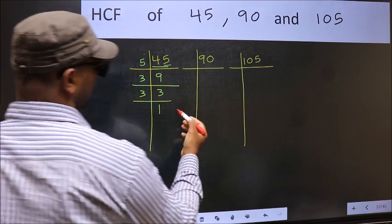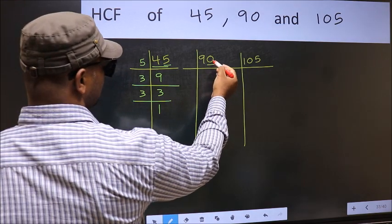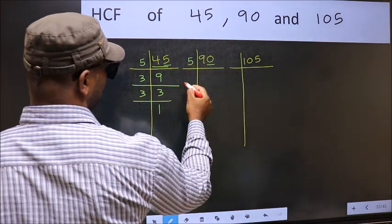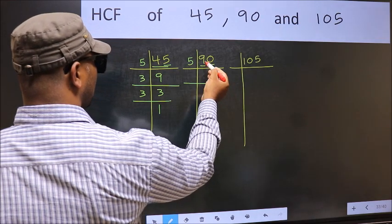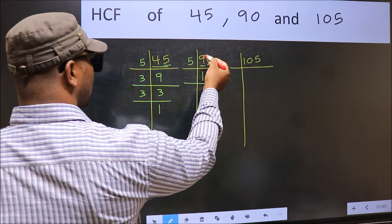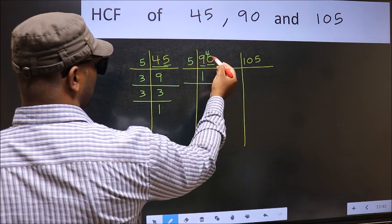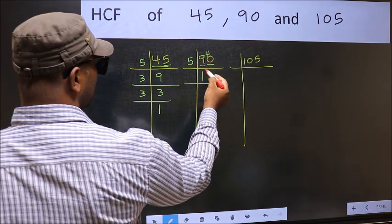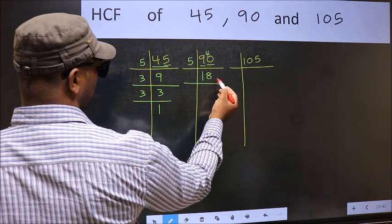Now the other number, last digit 0, so take 5. First number 9, a number close to 9 in 5 table is 5 ones 5. 9 minus 5, 4, 4 carried forward 40. When do we get 40 in 5 table? 5 eights 40.